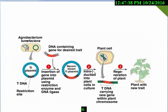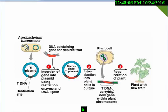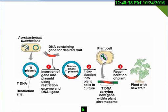When this recombinant Ti plasmid is introduced to a plant cell in culture, the T-DNA carrying the new gene is integrated within the plant chromosome. The Ti plasmid acts as a carrier of the gene. By using the Ti plasmid as a carrier, the new gene is transferred to our plant. In the plant cell chromosome, the new genes are present. After regeneration, when the plant goes to the next generation, the plant produces with the new trait.